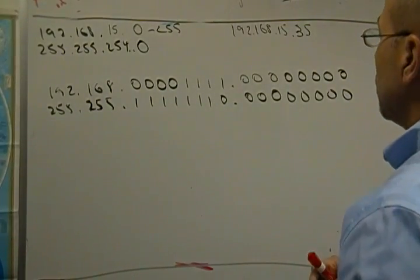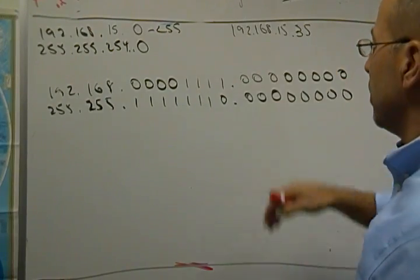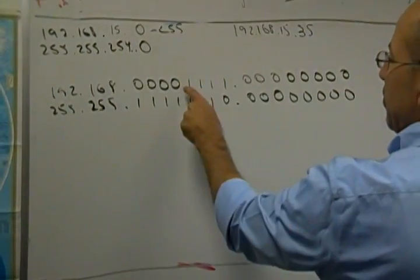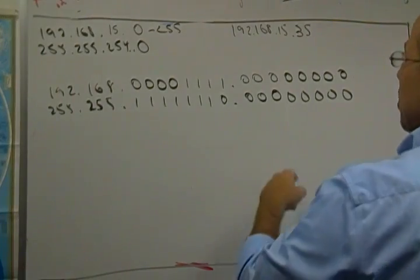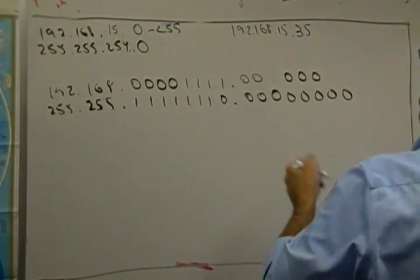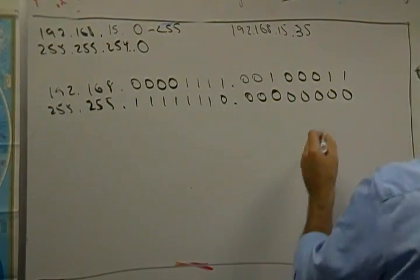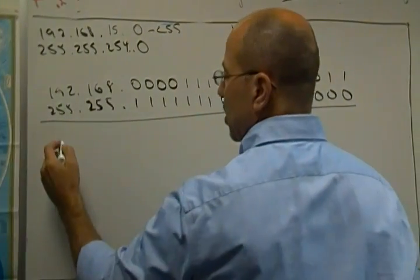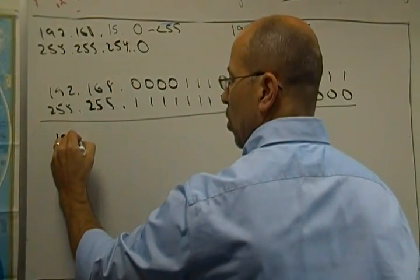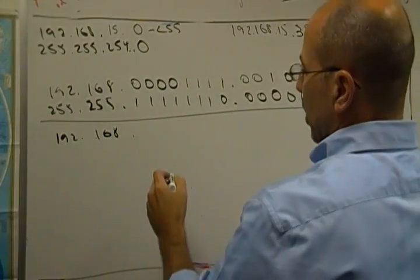So now the question is, what network is this particular host on? Well, he's still 15. Let's put 35 in here. Remember the 35 looked like this. If we do our ANDing process, we get 192, 168.